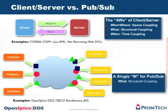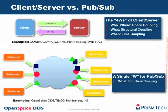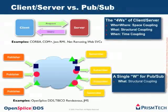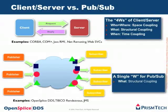When you have a client-server system, in order for the client and the server to exchange information you have to take into account four Ws. The first two are the who and the where, also known as space coupling — in order for a client to invoke a request on a server he needs to know where the server is and who the server actually is. Then there is the third W, which is the what: for the client and the server to communicate they need to agree on something — an interface or a function signature — and that's the structural coupling. And the fourth W is the time coupling, the when: the client and the server need to be in the system at the same point in time.